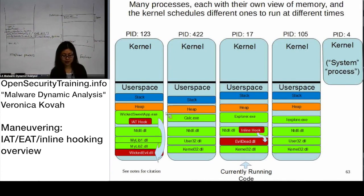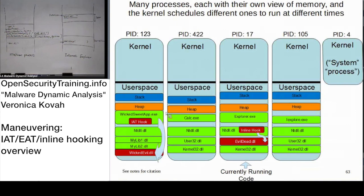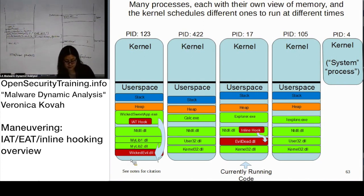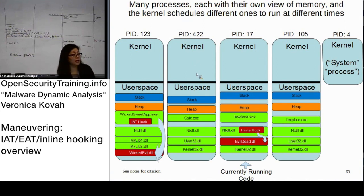This summarizes what we learned. Each process has its own memory space. If IAT hooking is occurring in one process, it does not affect the other processes. Similarly, if inline hooking takes place in one process, it is still independent between processes — different processes have separate memory spaces, so if one is attacked it does not mean the other process is attacked.